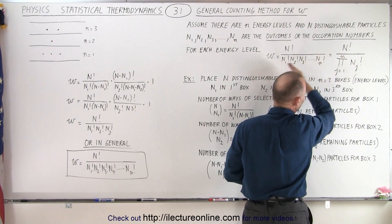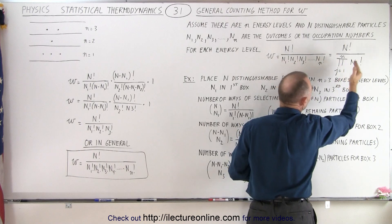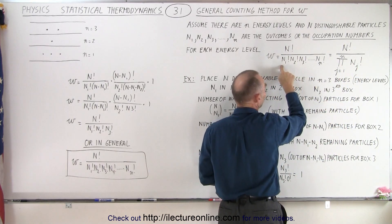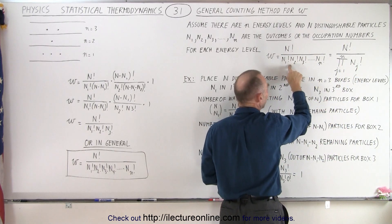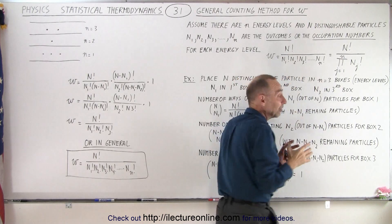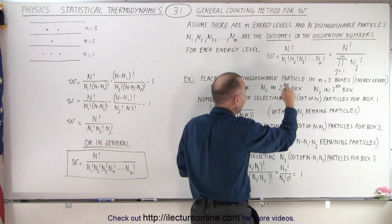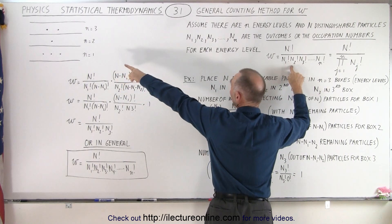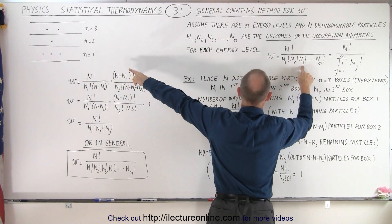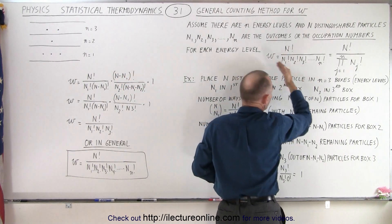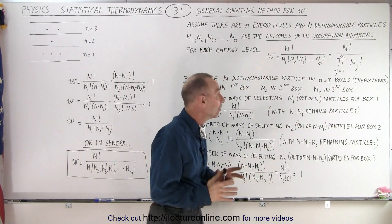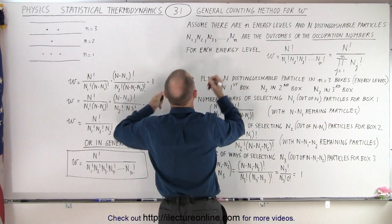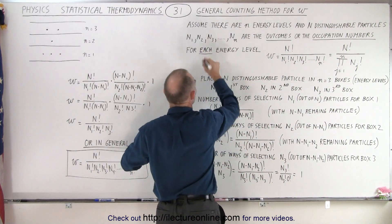There are n boxes and n energy levels, so we multiply in the denominator all of them together — however many there are in the first box factorial, times however many in the second box factorial, and so on. In this case it would be three factorial times one factorial times two factorial, but if there are more levels we just keep going for each level. That is the equation we use for each energy level.